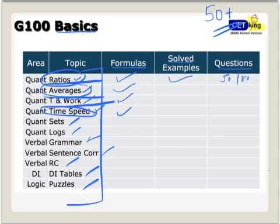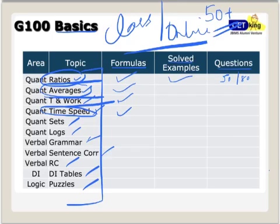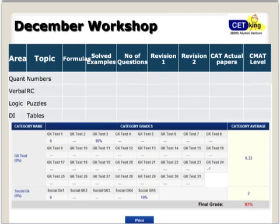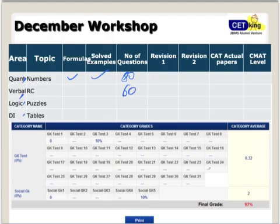For online students we'll get all the videos online, so both the classroom program and online program are going to go in parallel. I want you to fill this sheet by the end of the month. Topics to cover: averages, time and work, time and speed, set theory, logs, grammar, sentence correction, RC, DI, tables, puzzles. By the end of the year, the complete chart will show: formula done, solved example done, number of questions solved, revision done, CAT actual papers done.